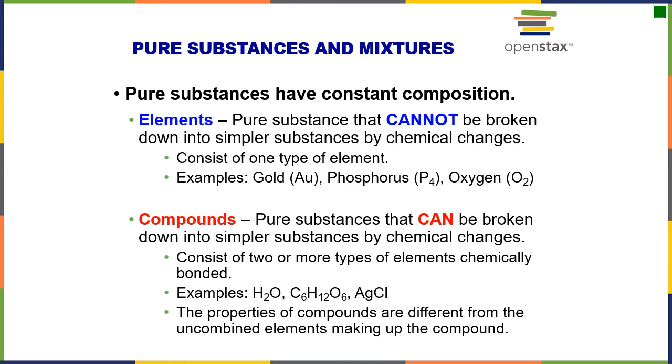Let's look at pure substances. Pure substances have constant composition, and they are broken into two types. There are elements, which we understand. Elements cannot be broken down into smaller pieces by chemical changes or in the lab. They can be single atoms or represented as single atoms, or they can be represented by multiple atoms and be molecules.